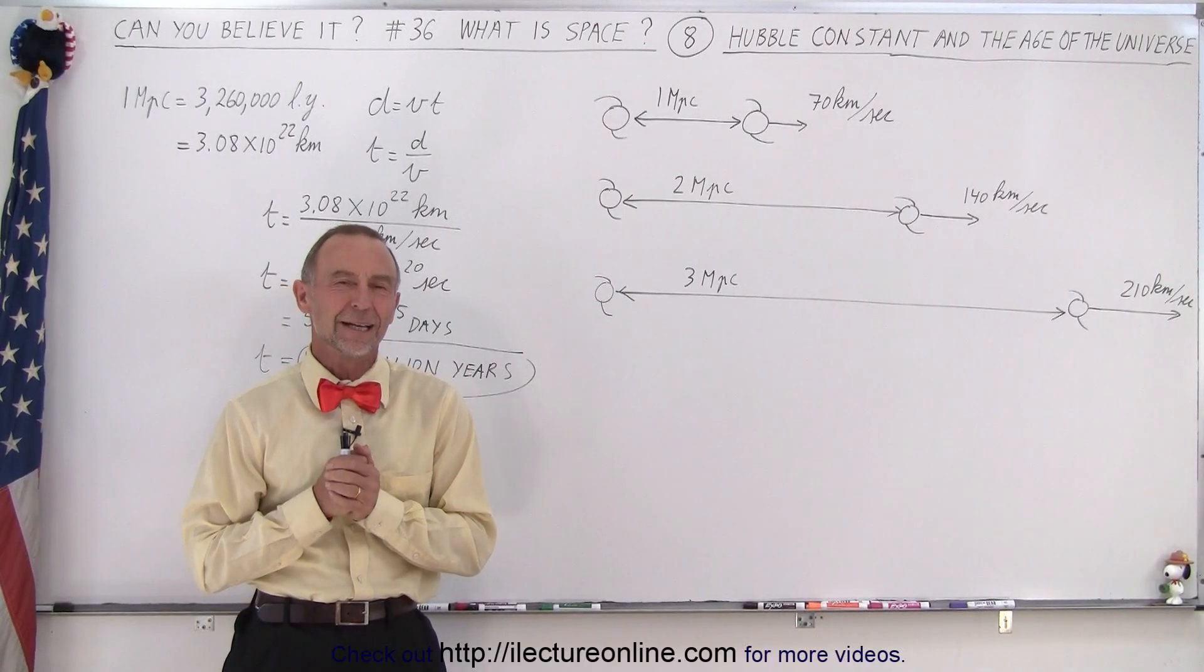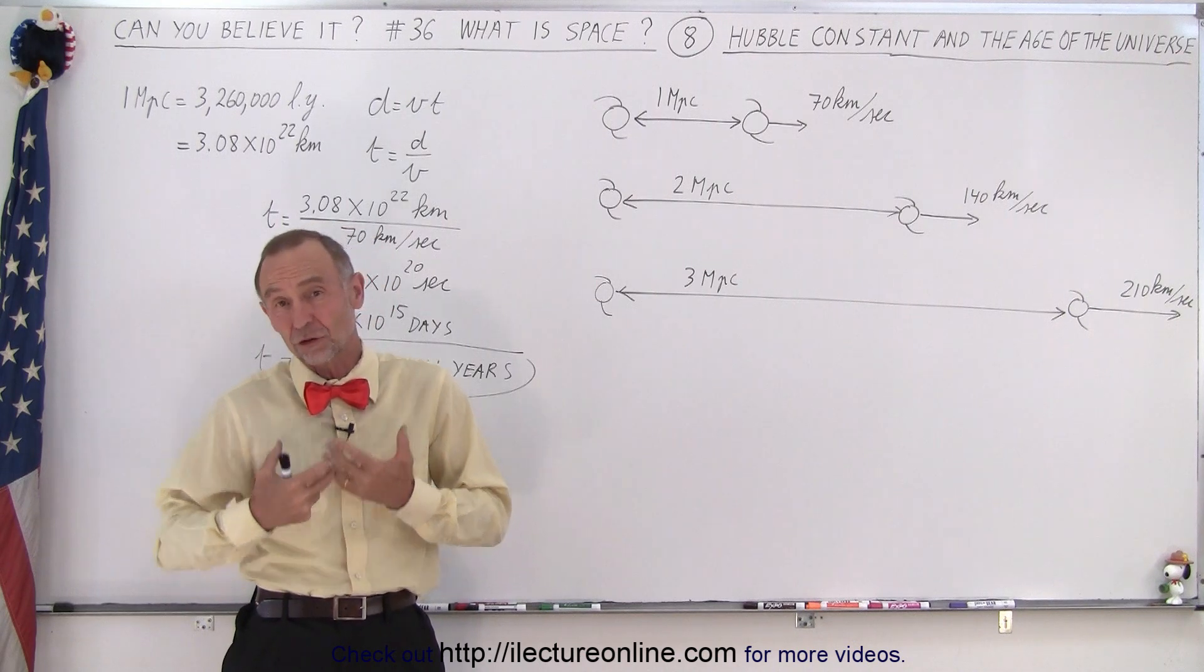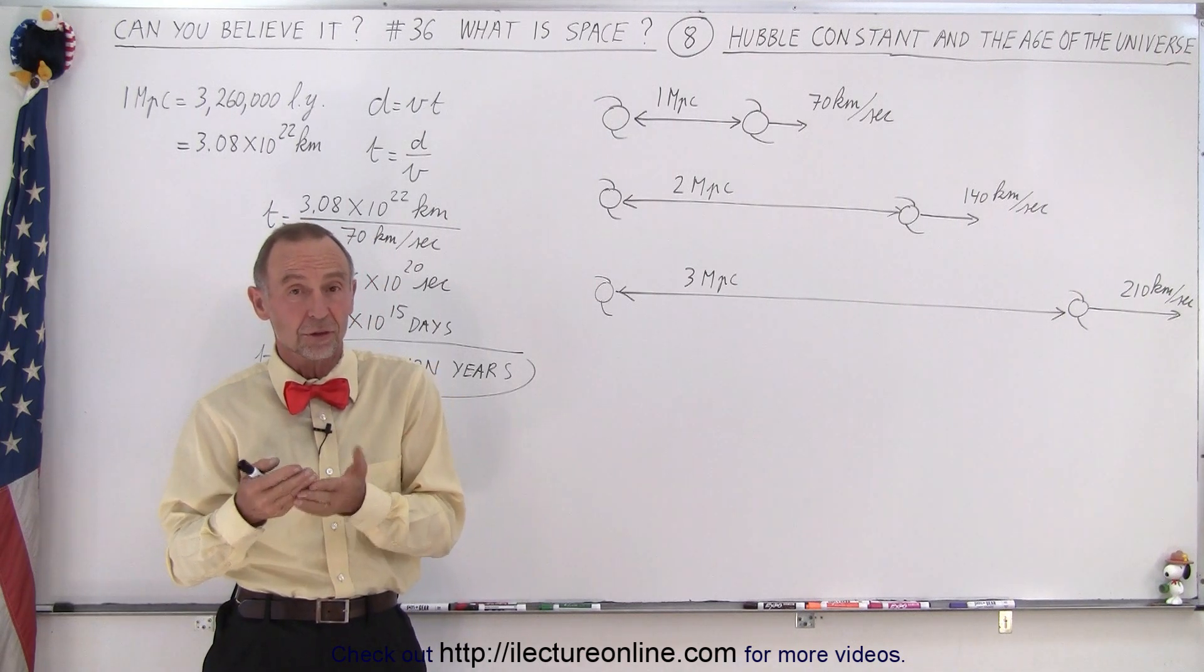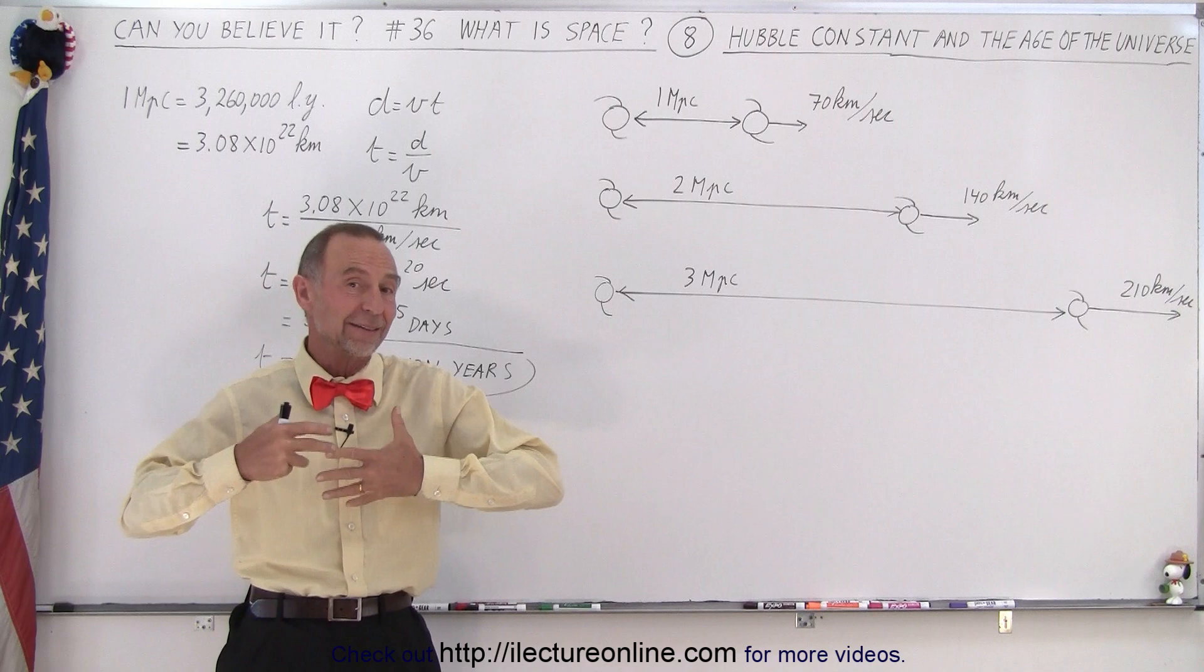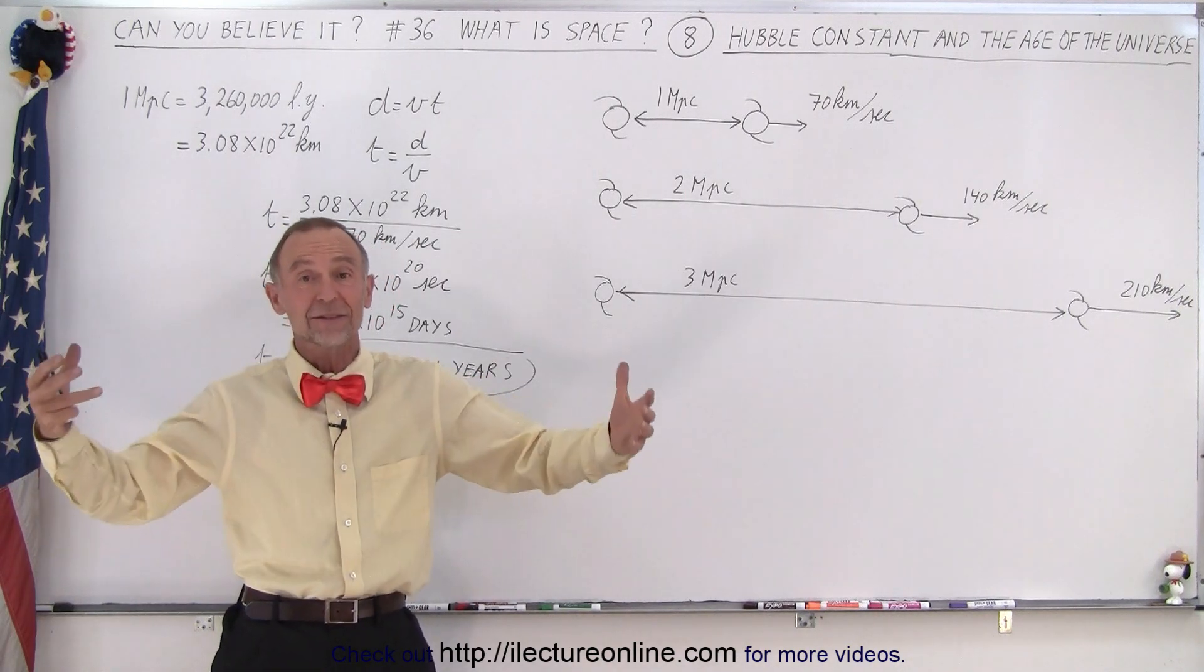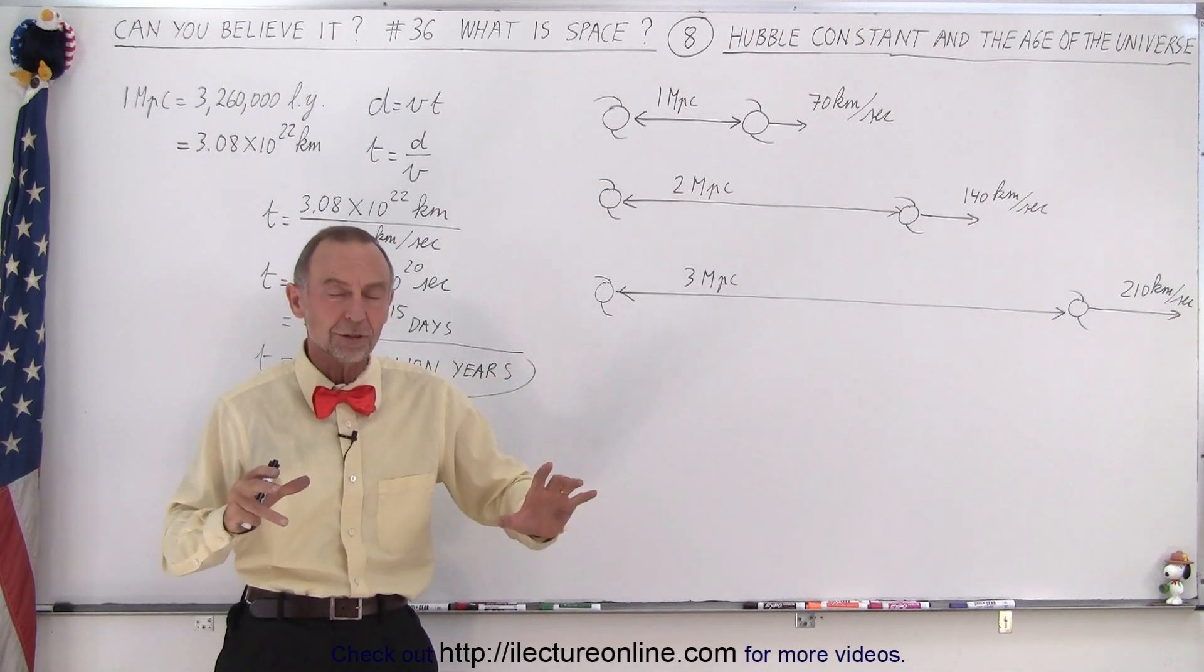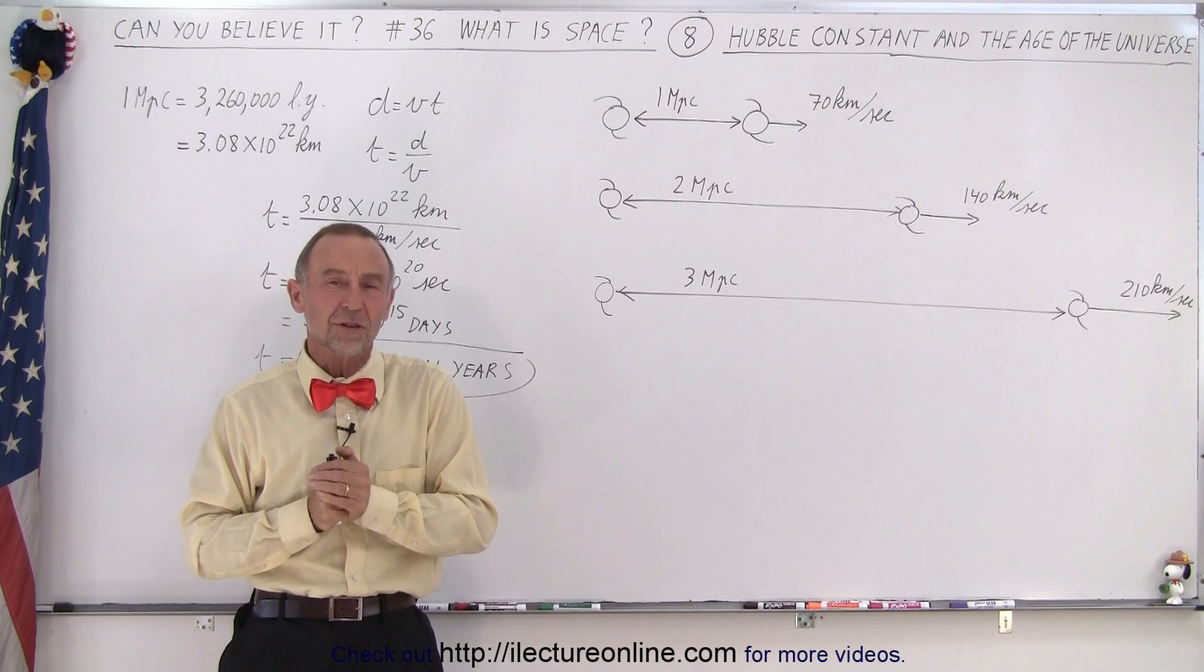Welcome to our lecture online. The discovery of the Hubble law and then the discovery of the Hubble constant, the constant that defined how fast things were moving away from each other. And when we say things, we're talking about galaxies that are millions and millions of light years apart from each other. All were moving away from each other proportional to their distance.